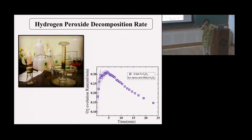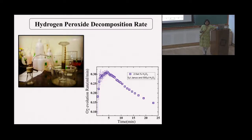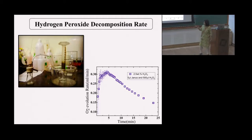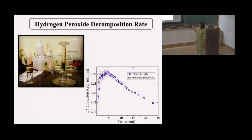One huge problem with these experiments is the evolution of oxygen bubbles. Since we want to look at particle motion under a microscope, it's very difficult for long times because of oxygen evolution. We measured the amount of oxygen produced using downward displacement of water with a 2.5% peroxide solution in H2O/D2O. The oxygen evolution rate is highest around up to five minutes and then goes down, so we conclude experiments there. All our experiments are for very limited times.